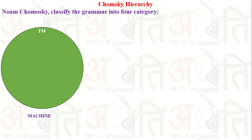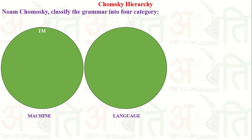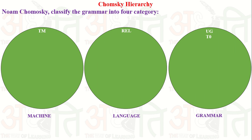In the last class we discussed the Turing machine. A Turing machine is a machine which contains tapes and a read-write head, with finite control and an infinite tape. The grammar associated with it is unrestricted grammar or Type 0 grammar, which generates a language known as a recursively enumerable language, and the machine which accepts this language is known as a Turing machine.